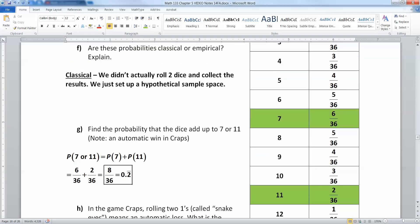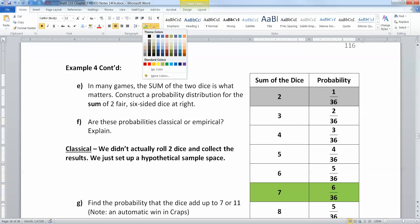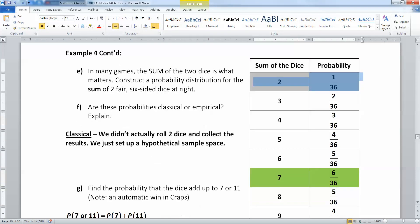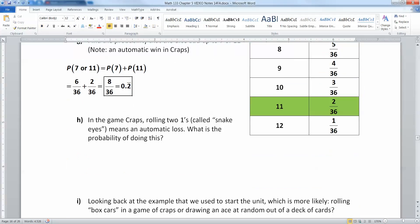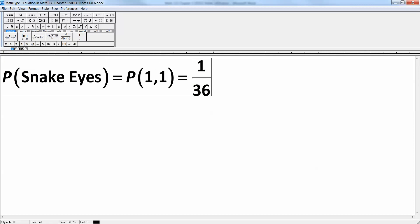What about snake eyes? Snake eyes is an automatic loss if you're playing craps in a casino. So that would be this value right here, too. So I'm going to make it gray because we're sad. So what are the chances of that? Well, that would be probability of snake eyes would be equal to the probability of 1,1, which is 1 out of 36, which is 0.027 repeating.